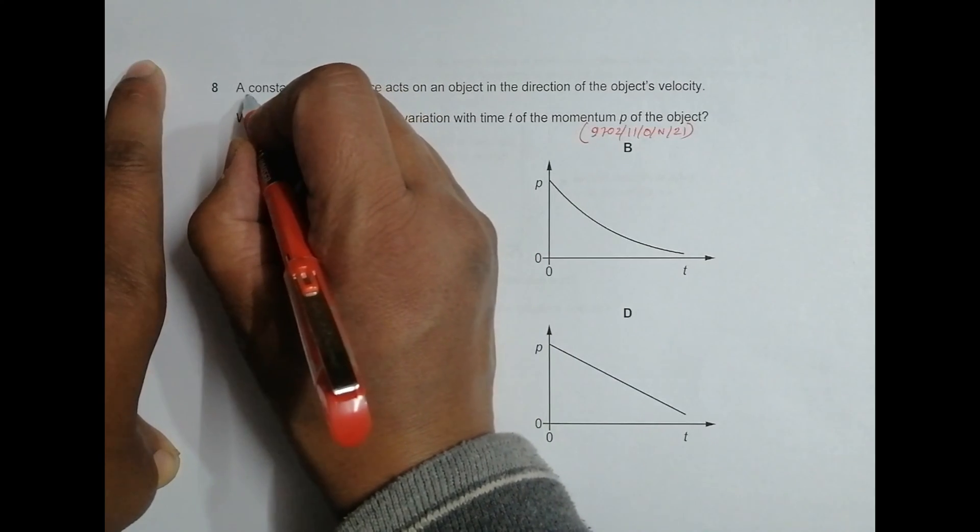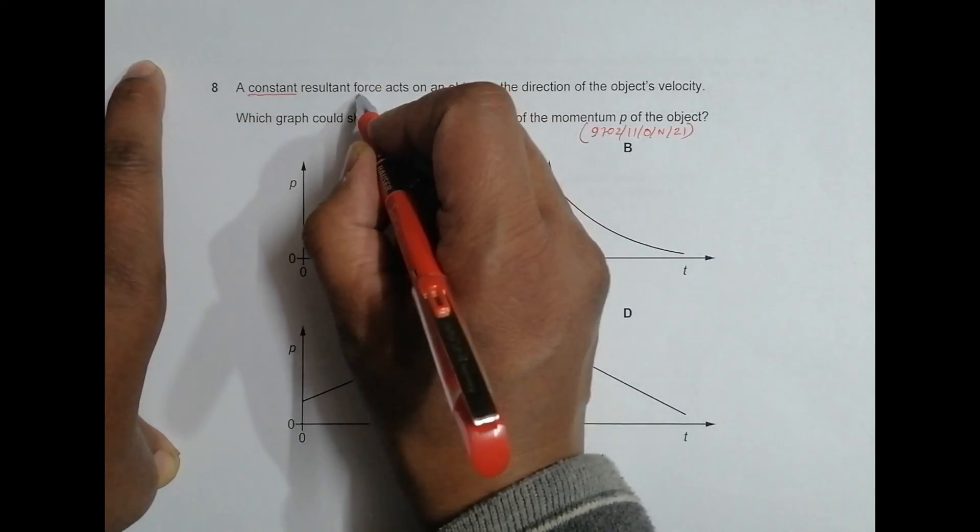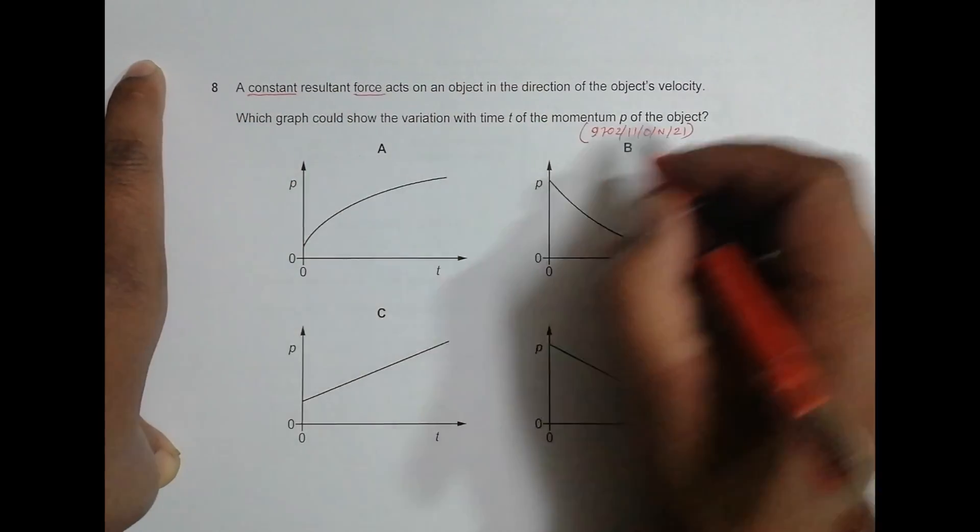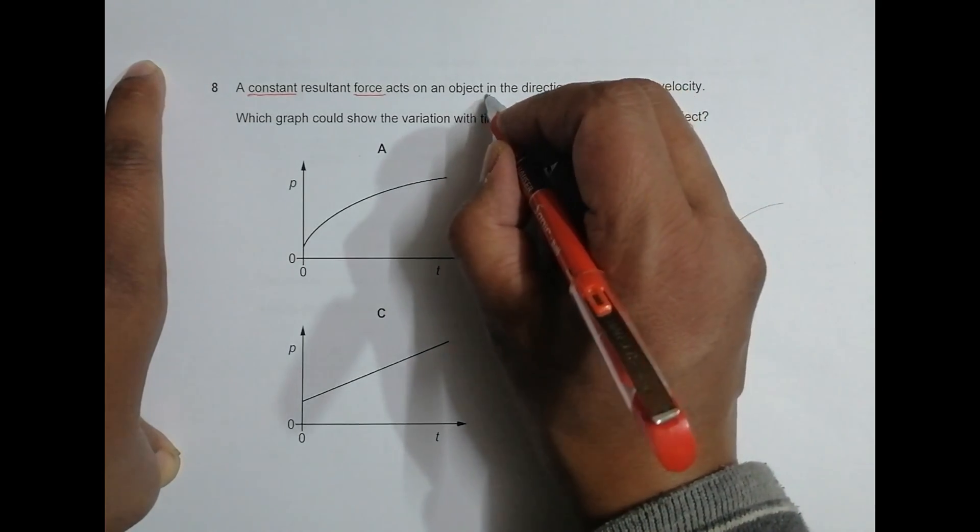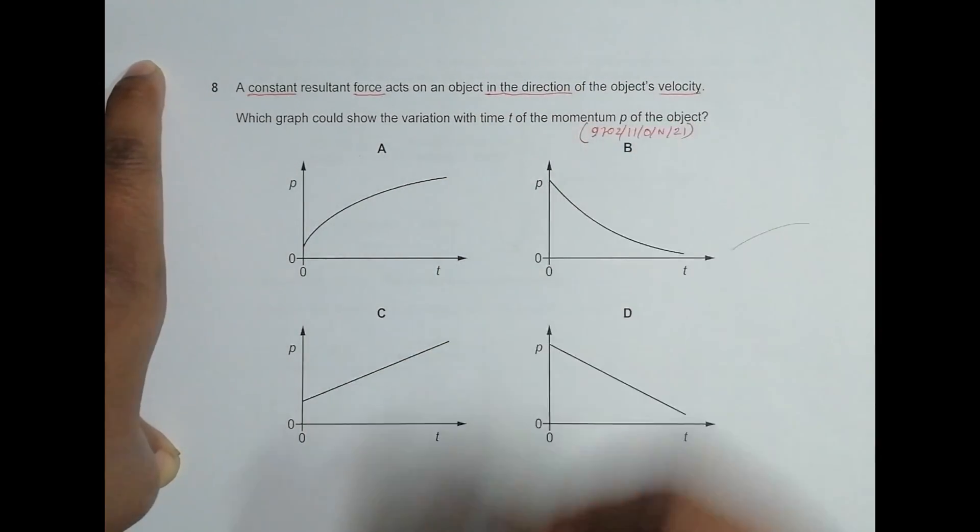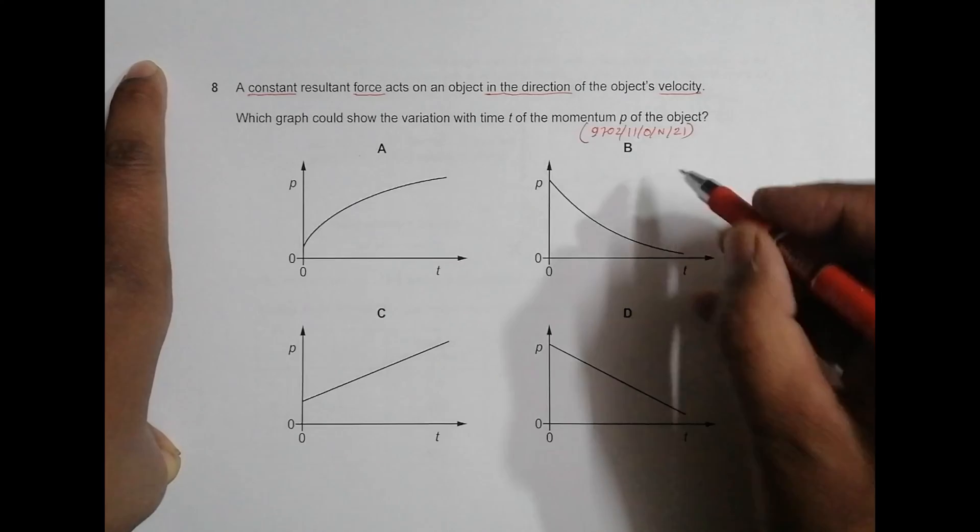So it says constant force, and the other thing to note is in the direction of the object's velocity. Which graph could show the variation with time t of the momentum p of the object? So we have to show the variation of p with time t.